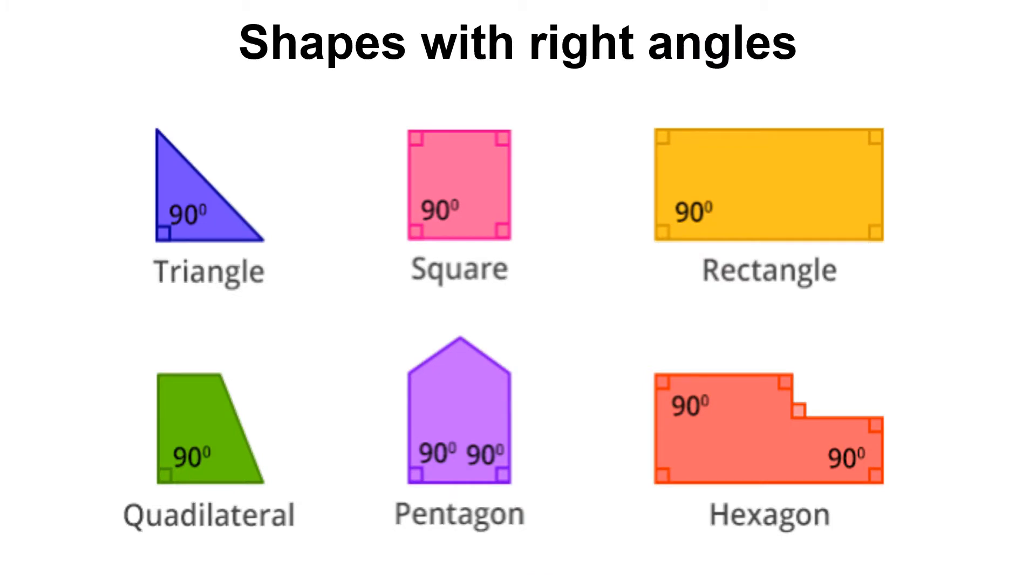We can find angles in shapes. For example, this triangle has three angles and this angle in this triangle is a right angle. All of these shapes have right angles in them.